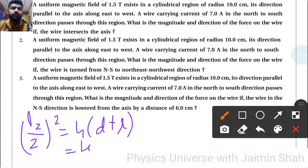So 4 into D plus R, now D that is 6 centimeter and here that is given 10 centimeter. So 10 centimeter means 0.1 plus 6 centimeter is 0.06.